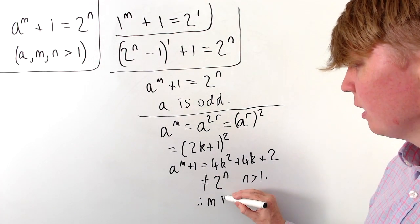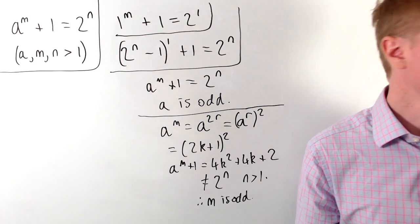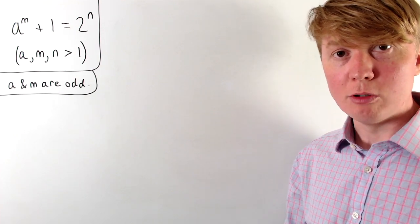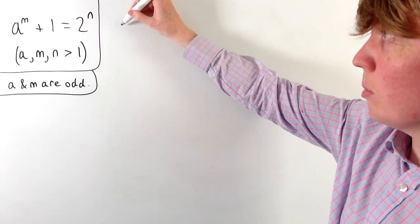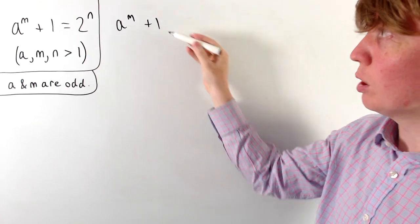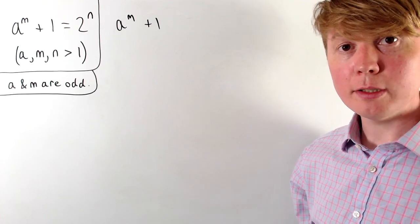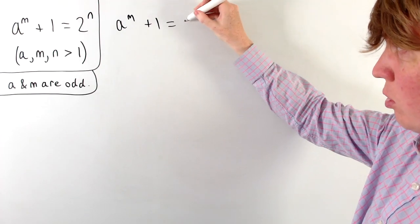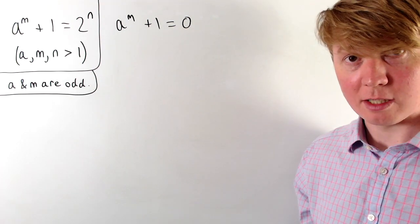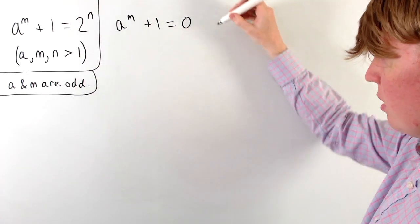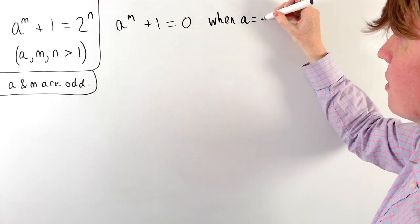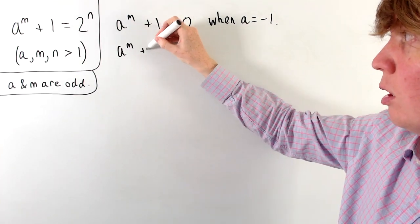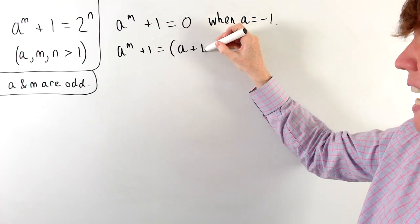So we can conclude that m has to be odd. Now that both a and m are established as odd, we can think about factorising a to the m plus 1. Treating a to the m plus 1 as a polynomial in a: because m is an odd power, this equals 0 when a is negative 1 (since negative 1 to an odd power is negative 1, then add 1 gives 0). So by the factor theorem, a to the m plus 1 must have a factor of the form a plus 1.